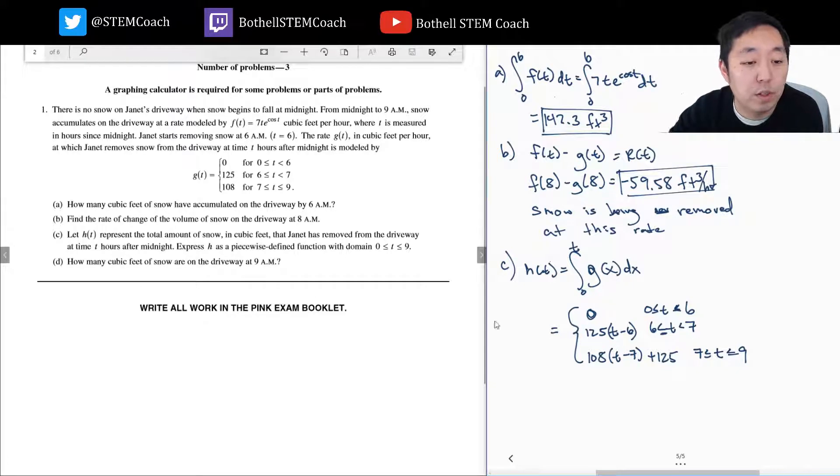Part D: How many cubic feet of snow are in the driveway at 9 a.m.? Well, I've got to integrate the rate from 0 to 9 a.m. of f(t) minus g(t). Now f(t) is continuous this whole time; g(t) I kind of have to subtract out. Well, I calculated that the integral - the rate would be the integral from 0 to 9 of f(t) dt.